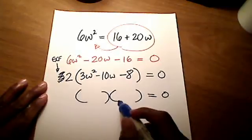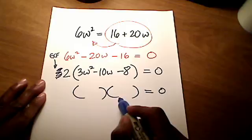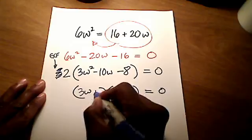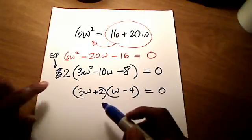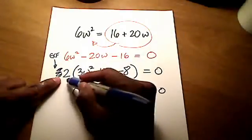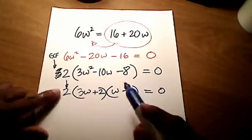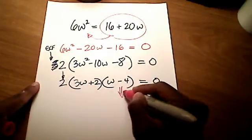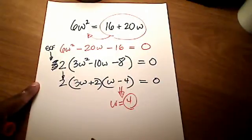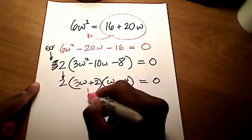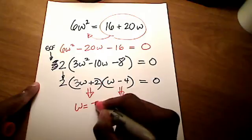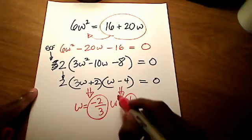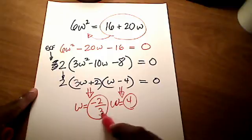You could do factor by grouping or guess and check. It turns out the two factored forms are 3w plus 2 and w minus 4. What about that 2 that we took out at the very beginning, that GCF? That's still part of my equation here. That comes on down. But I want you to see that when we use the shortcut to come up with our answers here, that 2 has no effect in our answer. So the shortcut answer here was 4. The shortcut answer out of this one was negative 2 over 3. So these are my two answers here for w, negative 2/3 and positive 4.